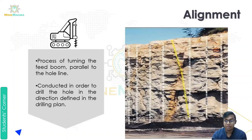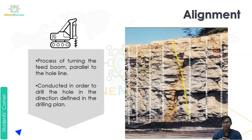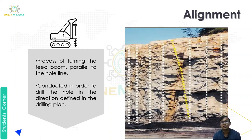Next is alignment — the process of turning the feed boom parallel to the hole line. This is conducted in order to drill the hole in the direction defined in the drilling plan, so that holes are drilled exactly as planned.